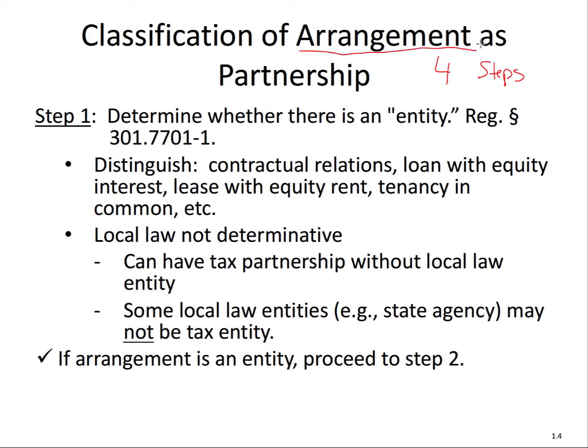Why do I say arrangement? Because it's not as simple as just asking whether we have a business entity. If we don't have an entity, it's still possible to have a partnership. For example, let's say you're a sole proprietor accountant and you work with another sole proprietor accountant. Under local law, you never formed a partnership, but maybe you do some type of profit sharing — one does tax compliance, one does tax consulting. Under the tax law, even though you're not a partnership under state law purposes, depending on your activity, you can actually be treated as a partnership for tax purposes.